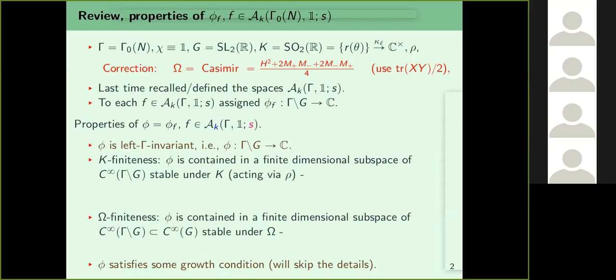K-finiteness meant that phi is contained in a finite-dimensional subspace of C^infinity(G/Gamma) stable under K. Recall G acts by the right regular representation on C^infinity(G/Gamma), so you can restrict to K, and choose a finite-dimensional K-stable subspace containing phi. Why is this true? It is a restatement — a variant — of what I stated last time. Second, omega-finiteness: phi is contained in a finite-dimensional subspace stable under omega.